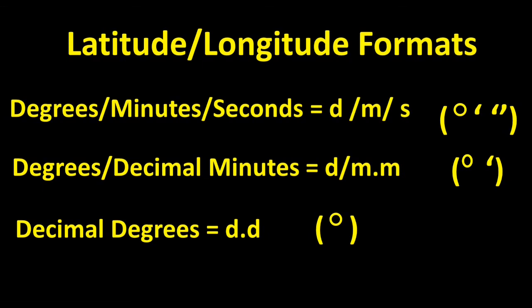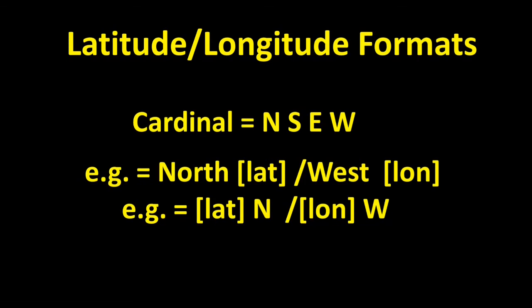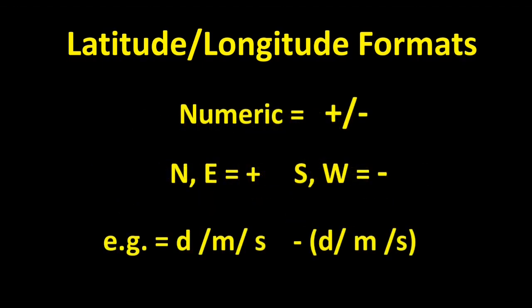There are also three acceptable formats for indicating cardinal direction from the equator and prime meridian. You can use the cardinal direction N, S, E, or W for north, south, east, or west, and you can put this cardinal either in front of or behind the latitude and longitude figures — either is correct. The second method is to use positive and negative numbers. North of the equator and east of the prime meridian are denoted as positive numbers, while south of the equator and west of the prime meridian are displayed as negative numbers. By convention, the plus sign is not used on positive numbers, but the negative or minus sign is used for all negative numbers.